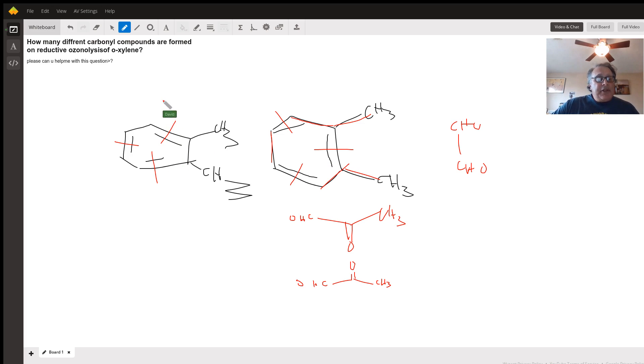From the left-hand resonance form, what's going to happen is that we're going to get cleavage here and cleavage here, which is going to leave this piece looking like this. And then we're going to have these two carbon pieces here.